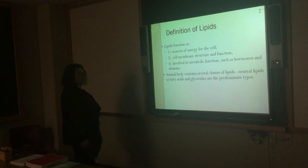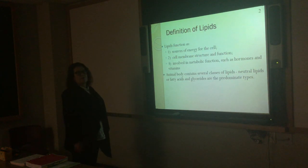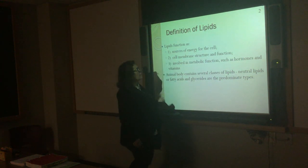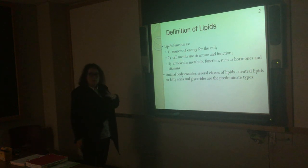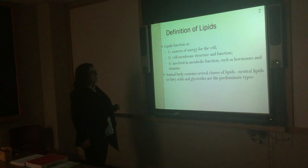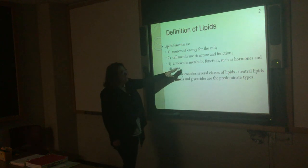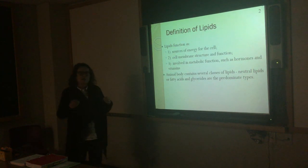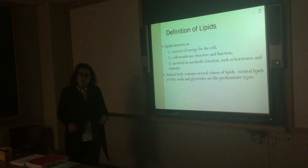Lipid oxidation is involved in deterioration of flavor, so we're going to talk about lipids first and their structure before we talk about oxidation and antioxidants. Lipids are important. They've gotten a really bad reputation since the 1990s. But they are sources of energy for the cell, involved in cell membrane structure and function. We've talked a lot about that with the sarcolemma and the sarcoplasmic reticulum — that lipid bilayer. They're also involved in metabolic functions such as precursors for hormones and vitamins, and they're very important in brain development.